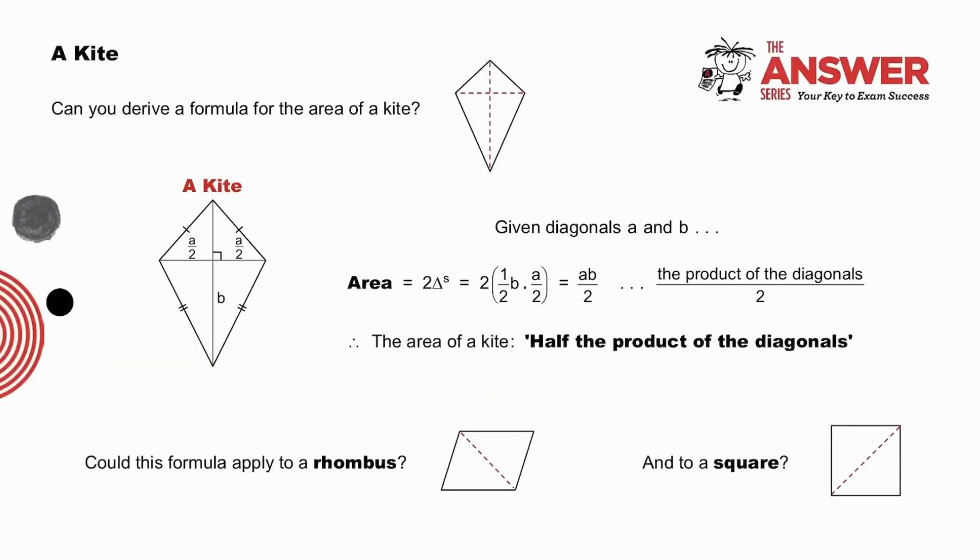Can you derive a formula for the area of a kite? This time we use both diagonals. Pause to try. Given diagonals a and b, we notice that the long diagonal b bisects the short diagonal a, and it bisects the area of the kite into two equal triangles. In both triangles, b is the base and a over 2 is the height. And the area of each triangle is half base times height. So if we have a look at the contents in this bracket here, the area of one triangle is a half of the base b times the height, a over 2.